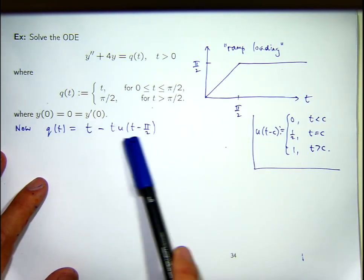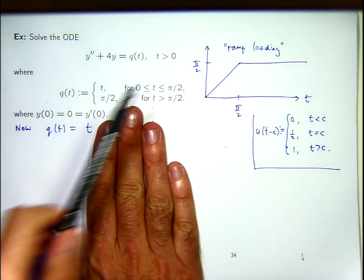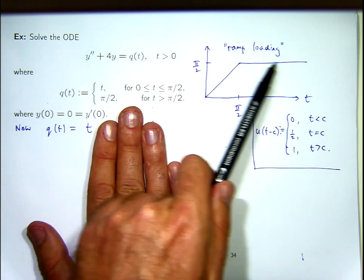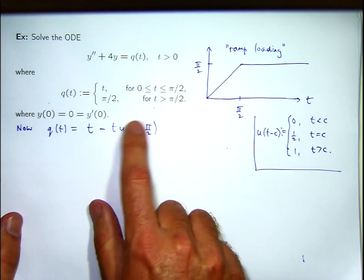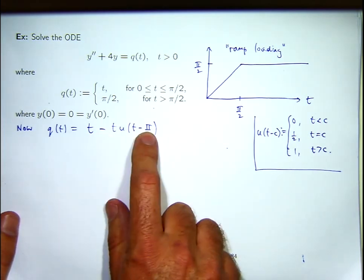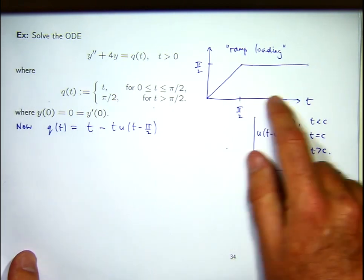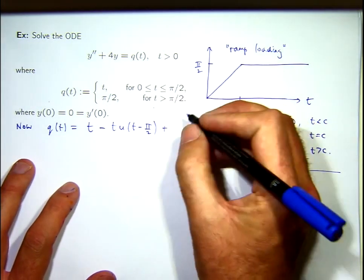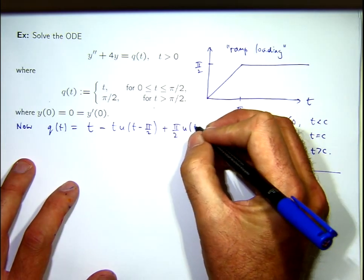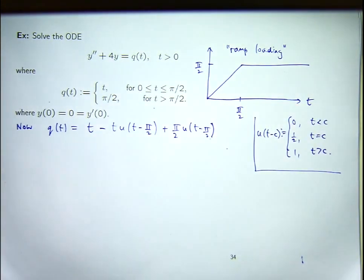To the left of pi on 2, the Heaviside is 0, so I get T minus T times 0, which just gives the T function — that's good. To the right, it gets switched on: T minus T times 1 gives 0. But I want pi on 2, not 0 — otherwise my graph would be wrong. So what I want to do is add in another term. The first term gives the initial curve on the left, the middle term cancels off the T function, and the third term puts the constant in place.